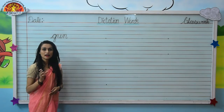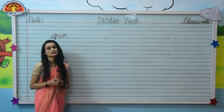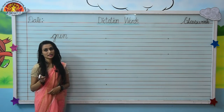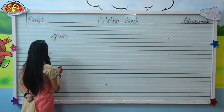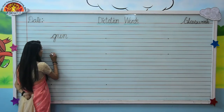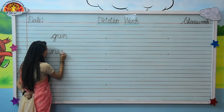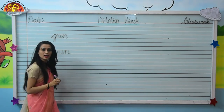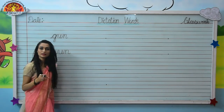Next is none. Spelling of none is N-U-N, none. So write down: N-U-N, none.